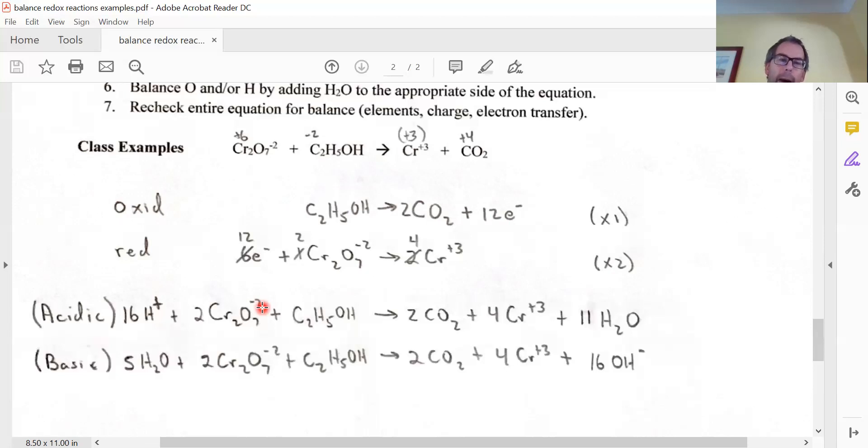I need 16 more positives on this side to balance it out. Under acidic conditions, you just add H plus. So I add 16 H plus here.